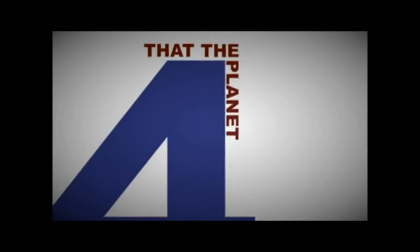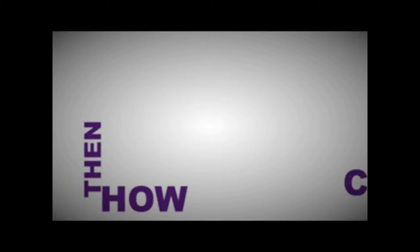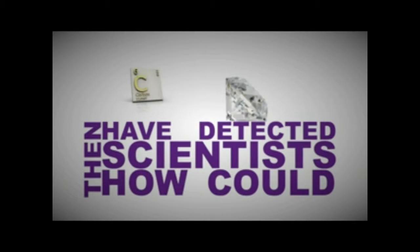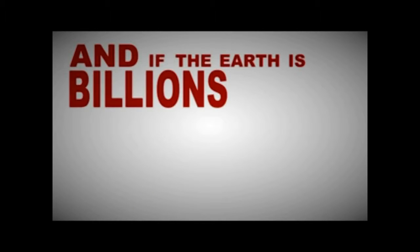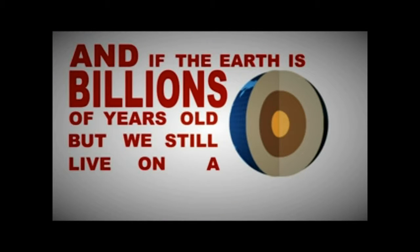One billion seems like a big number, and many believe that planet Earth is not just one, but over 4 billion years old. But if the Earth is billions of years old, then how could scientists have detected carbon-14 in diamonds deep in the Earth, an element that only lasts thousands of years? And if the Earth is billions of years old, then the Earth's magnetic field should have long ago depleted its energy, but we still live on a very lively planet.